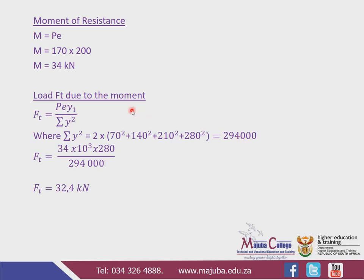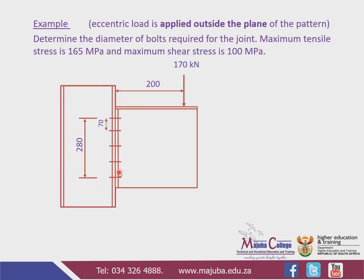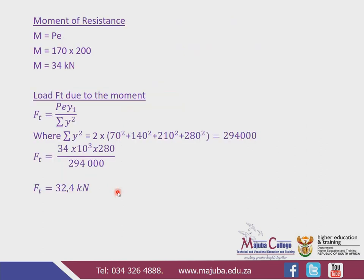So we now apply the formula: Ft = Pe × y₁ / Σy². Pe is 34 kN, converted to newtons that's 34 × 10³ N. y₁ is the distance to the outermost bolt, which is 280 mm. All over 294,000. We divide the result by 1,000 to convert back to kilonewtons, which gives us 32.4 kN as the tensile load due to the moment.